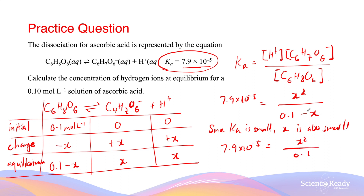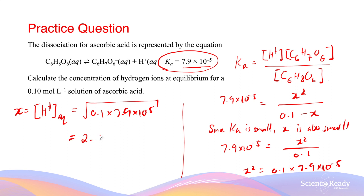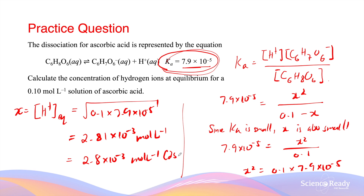By removing the x in the denominator, I can multiply both sides by 0.1 to get x squared equals 0.1 times 7.9 times 10 to the minus 5. Since x represents the concentration of hydrogen ions at equilibrium, x equals the square root of 0.1 times 7.9 times 10 to the minus 5, which gives 2.81 times 10 to the minus 3 mol per liter. As the final answer, I'll leave it as 2.8 times 10 to the minus 3, since the Ka constant is given to two significant figures.